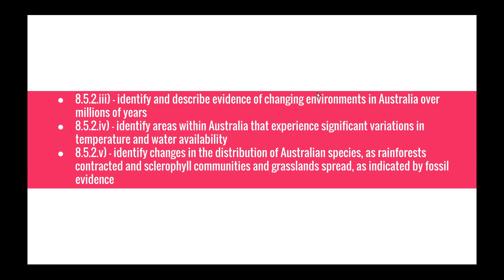Welcome to the next video in the evolution series. This video will be looking at three dot points from the evolution of Australian biota topic: 8.5.23, identify and describe evidence of changing environments in Australia over millions of years; 8.5.24, identify areas within Australia that experience significant variations in temperature and water availability; and 8.5.25, identify changes in the distribution of Australian species as rainforests contracted and sclerophyll communities and grasslands spread, as indicated by fossil evidence.